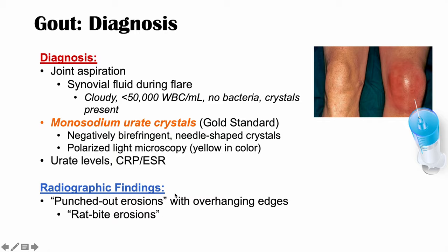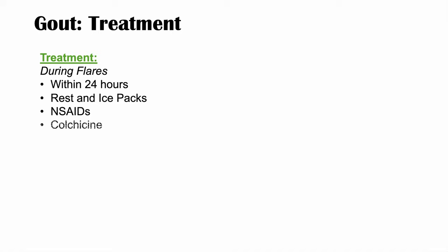Treatment of gout is split between managing a flare and maintenance to prevent future flares. Importantly, asymptomatic hyperuricemia with no prior flares requires no treatment. For a gout flare, treatment is best initiated within 24 hours. Options include rest and ice packs, NSAIDs such as naproxen, colchicine, and systemic glucocorticoids — specifically for patients who cannot tolerate colchicine or have renal failure and shouldn't take NSAIDs. Treatment duration is typically seven to ten days.